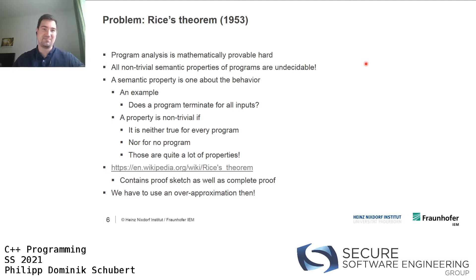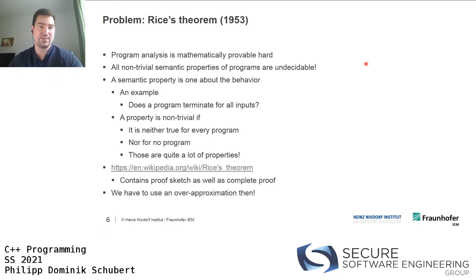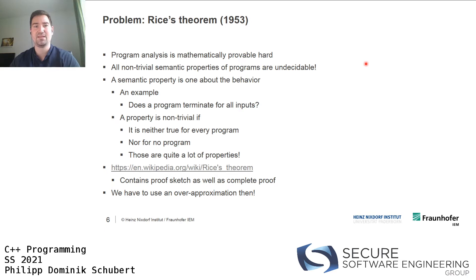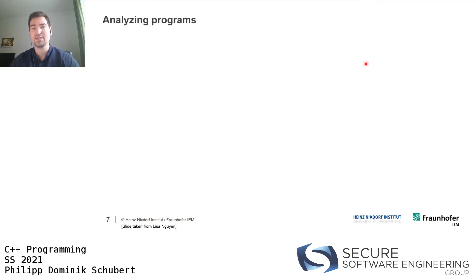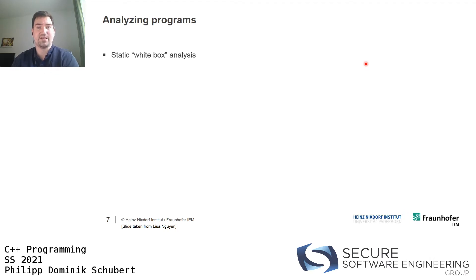Since we can't compute exact solutions, we can use over-approximations or sometimes under-approximations. We need to approximate in order to be able to compute anything useful, and for the most part that's still okay - we can still get results that are interesting, relevant, and useful to us.